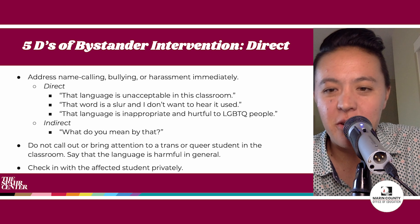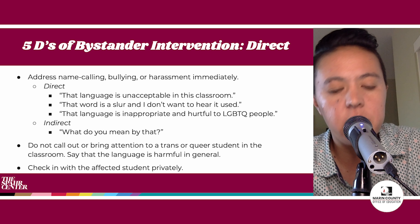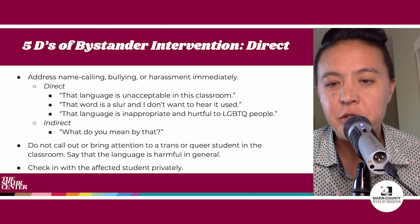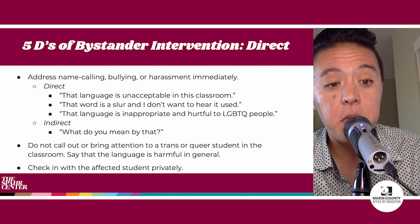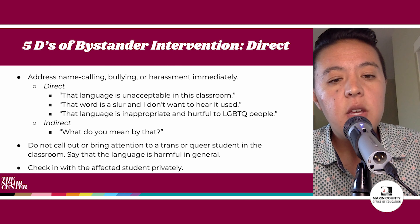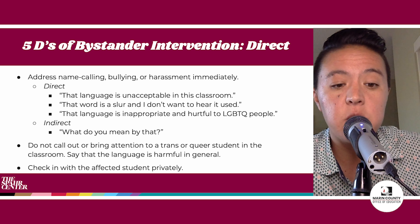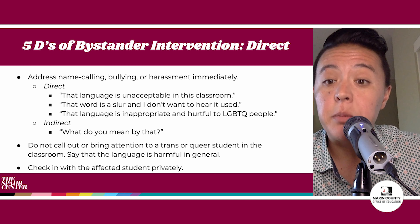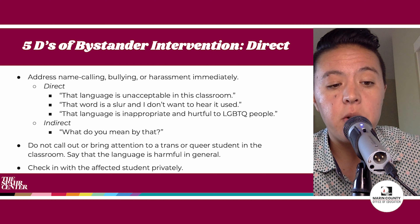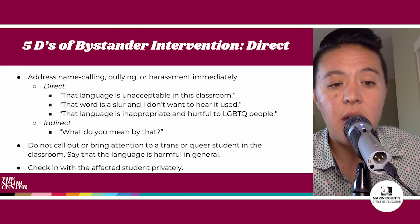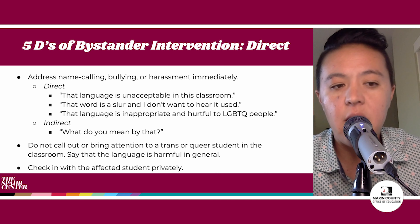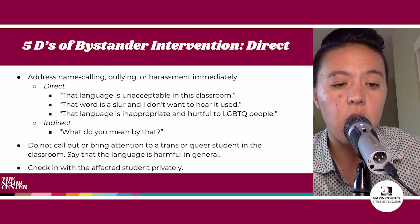Bringing this all together, we can keep both guiding frameworks in mind for bystander intervention. We can look at the five D's of bystander intervention, with Direct being the first. If we hear name-calling, microaggressions, misgendering, bullying, or harassment, we need to immediately and directly address the situation. Instead of saying something vague like 'what do you mean by that,' we want to address whatever was said directly — something like 'that language is unacceptable in this classroom' or 'that word is a slur and I don't want to hear it used' or 'that language is inappropriate and hurtful to LGBTQ+ people.' We don't want to bring attention to the student who was harmed, so we should check in with that student privately at another time. The focus of the direct statement should be on the harm, not who was harmed.